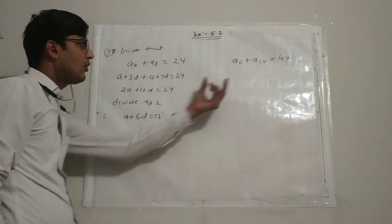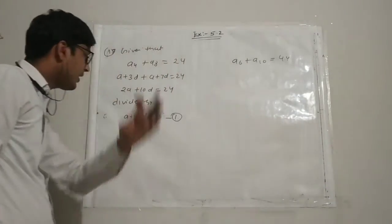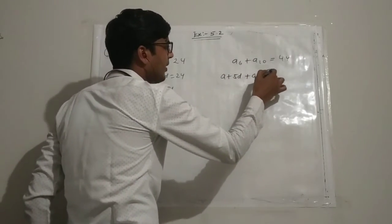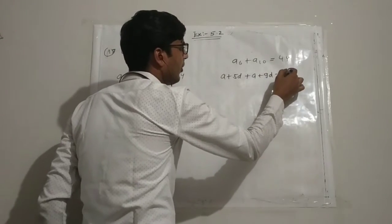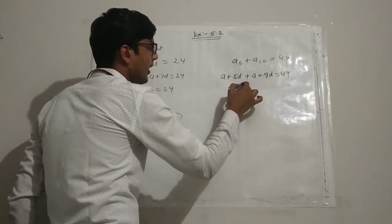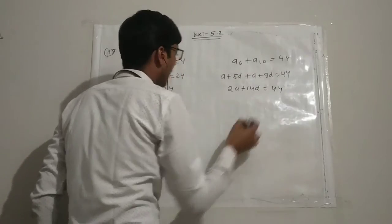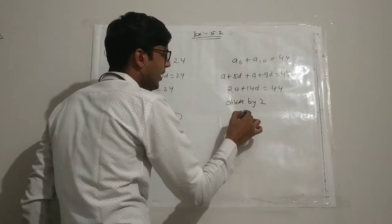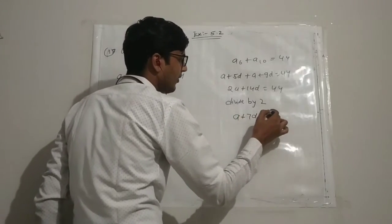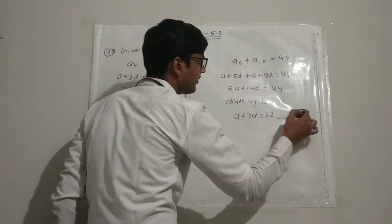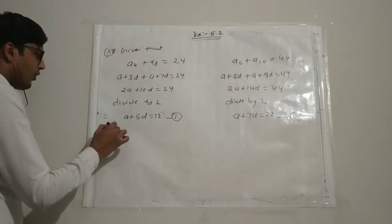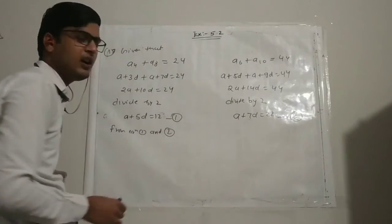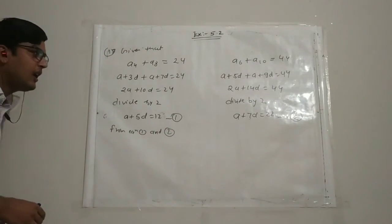Similarly, A6 equals a plus 5d and A10 equals a plus 9d: (a plus 5d) plus (a plus 9d) equals 44, giving 2a plus 14d equals 44. Dividing by 2: a plus 7d equals 22. This is equation two. We use the elimination method to solve equations one and two.